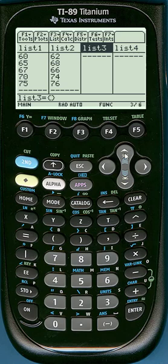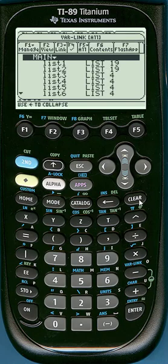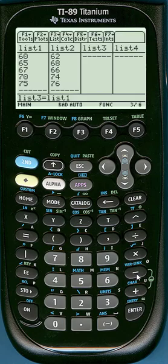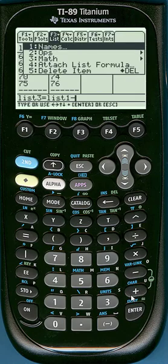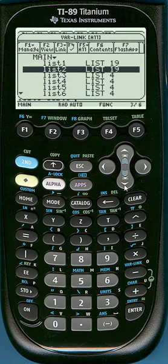One way to do this, and both ways require that you be at the top of the list, so notice list three is highlighted, is to click on F3, choose names, scroll down to list one and click enter, then press the minus sign, go back to F3, click on names again and scroll down to list two.